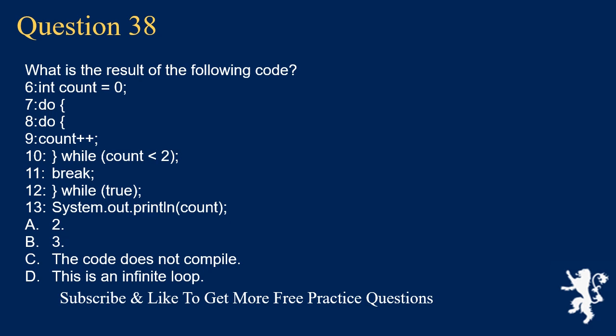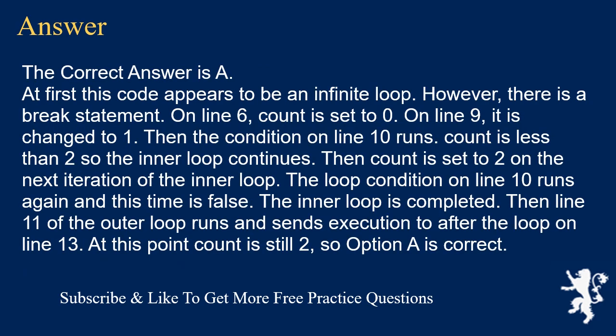Question 38. What is the result of the following code? int count = 0; do { do { count++; } while (count < 2); break; } while (true); System.out.println(count); A. 2. B. 3. C. The code does not compile. D. This is an infinite loop. The correct answer is A. Count is set to 0. On line 9, it becomes 1. Since count < 2, the inner loop continues and count becomes 2. The inner loop condition is now false so the inner loop completes. Then the break runs and sends execution to after the outer loop. Count is still 2, so option A is correct.